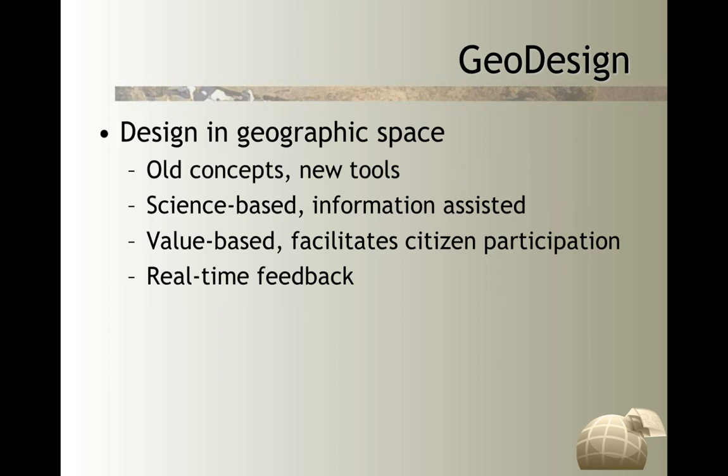Geodesign also takes value-based information and citizen participation — what community members find important, what they value about their communities — and compares that with the science the data is showing on the landscape. Then it tries to see if what communities value, articulated through their goals and objectives, actually makes sense with what the data is showing. For example, a community may have goals to both protect farmland and promote low-density development.